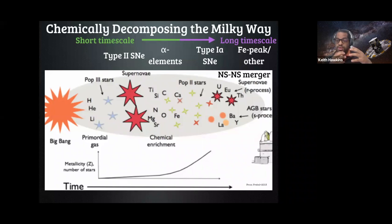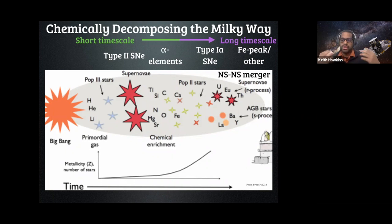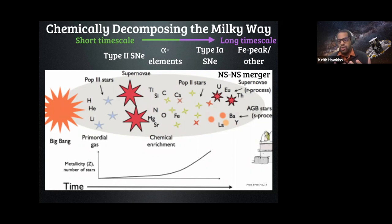The best way to start is to remind everyone how the universe evolves chemically over time. This is a nice image from Anna Frebel that nicely puts together chemical evolution. You have the Big Bang at the beginning of the universe, giving you hydrogen, helium, and trace amounts of lithium. That forms your first generation of stars — your so-called population three stars, your metal-free stars. No one has ever seen one, so we don't really know what they look like. They're thought to be fairly massive and metal-free, and they explode as supernovae or hypernovae, dispersing all their nucleosynthetic products — all the elements they formed — into the interstellar medium.